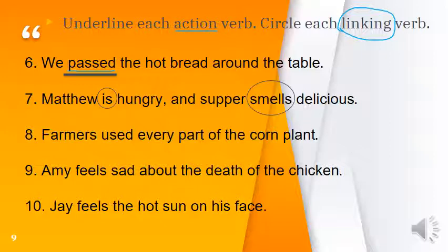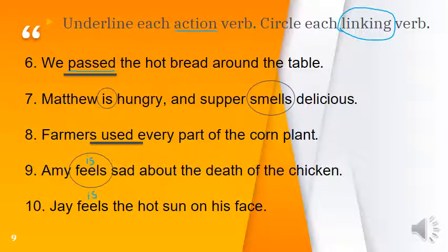Number 8: 'Farmers use every part of the corn plant' — 'use' is an action verb. Number 9: 'Amy feels sad about the death of the chicken' — substitute 'is': 'Amy is sad about the death of the chicken' — yes, so 'feels' is a linking verb. Number 10: 'Jay feels the hot sun on his face' — substitute 'is': 'Jay is the hot sun on his face' — no, that doesn't make sense, so 'feels' here is an action verb.